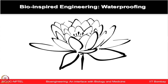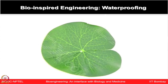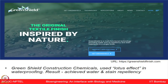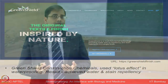Look at this lotus flower and its leaf. They provide an example for waterproofing. The lotus leaf has crevices on a microscopic rough surface which trap air, upon which water droplets float. So the lotus gives us a lesson for waterproofing. This observation was utilized by a company, Green Shield, inspired by nature, which made chemicals using the lotus effect for waterproofing paints.